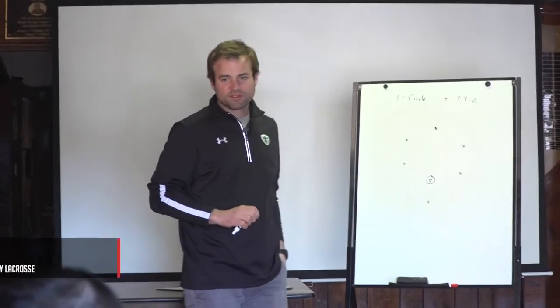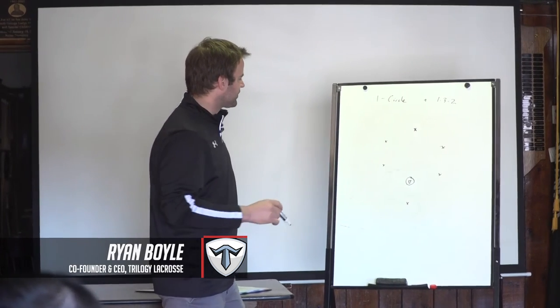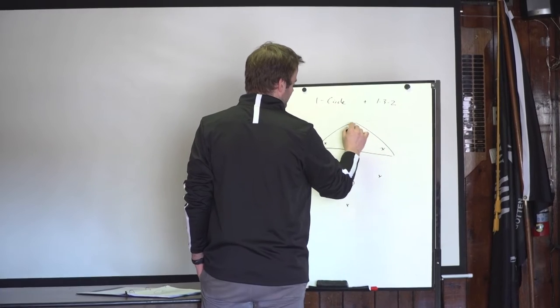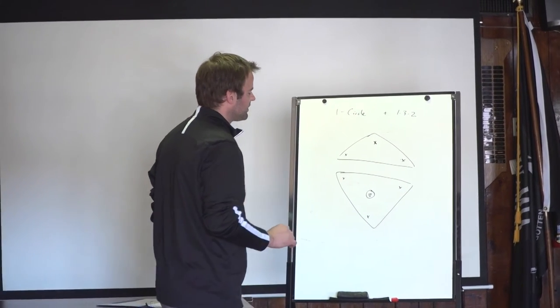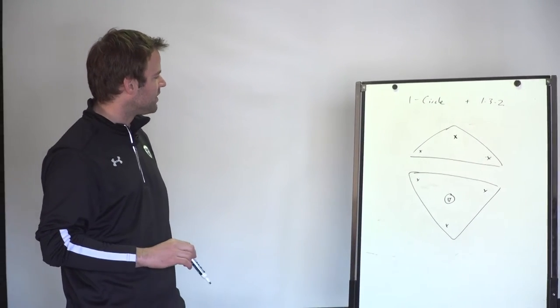All right, so we'll basically replicate the exact same thing for one circle and one, three, two. And the one circle, the easiest way for me to visualize things is two three-man games here. One of these triangles up top and then one triangle down low.